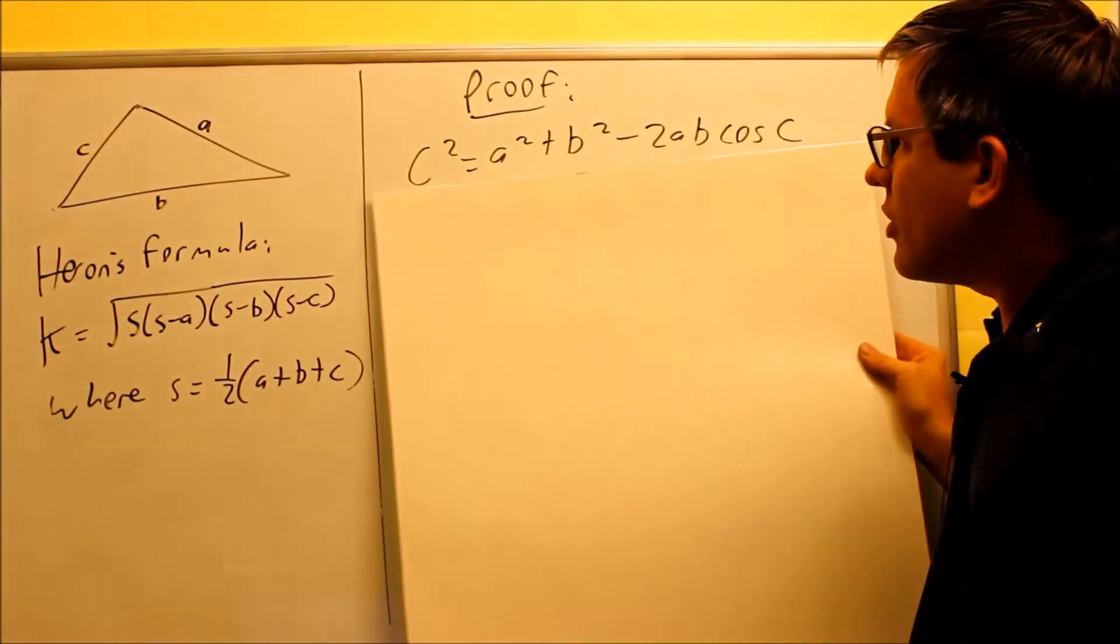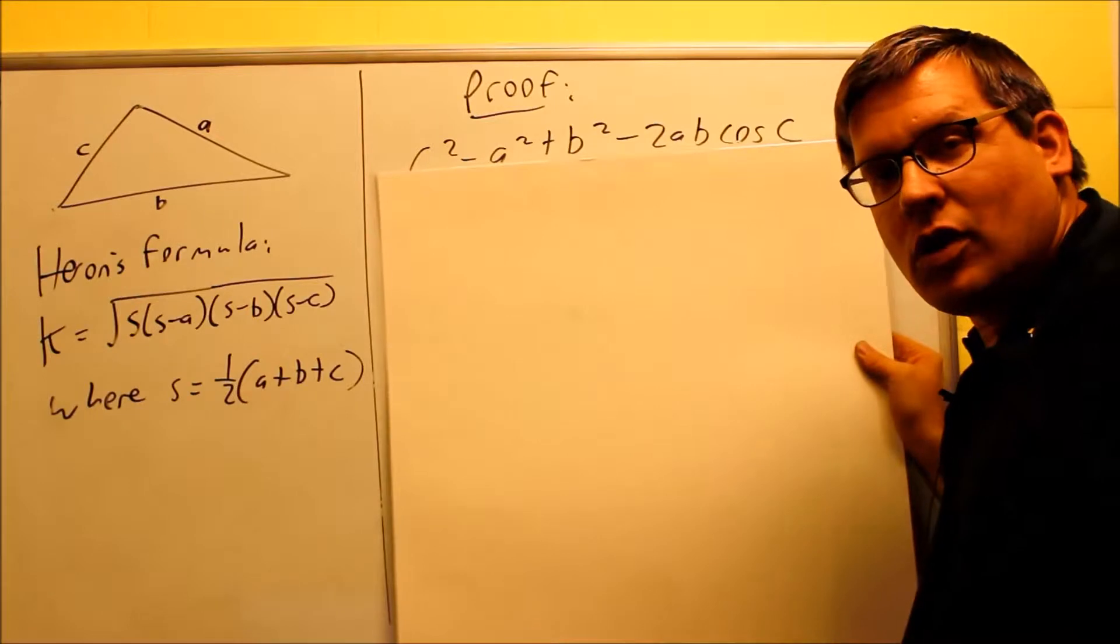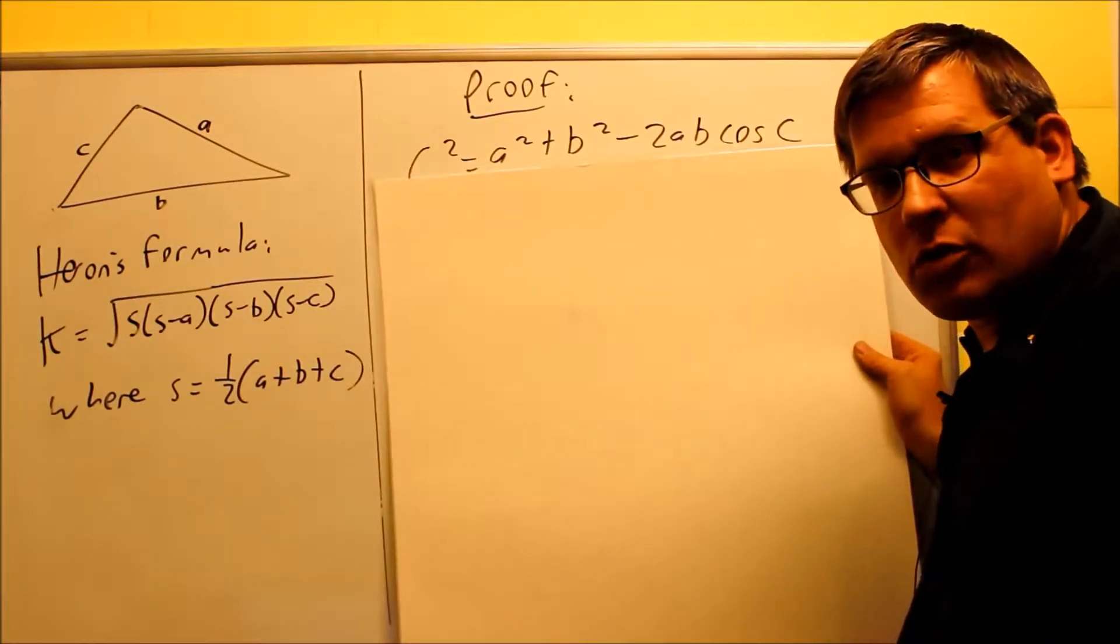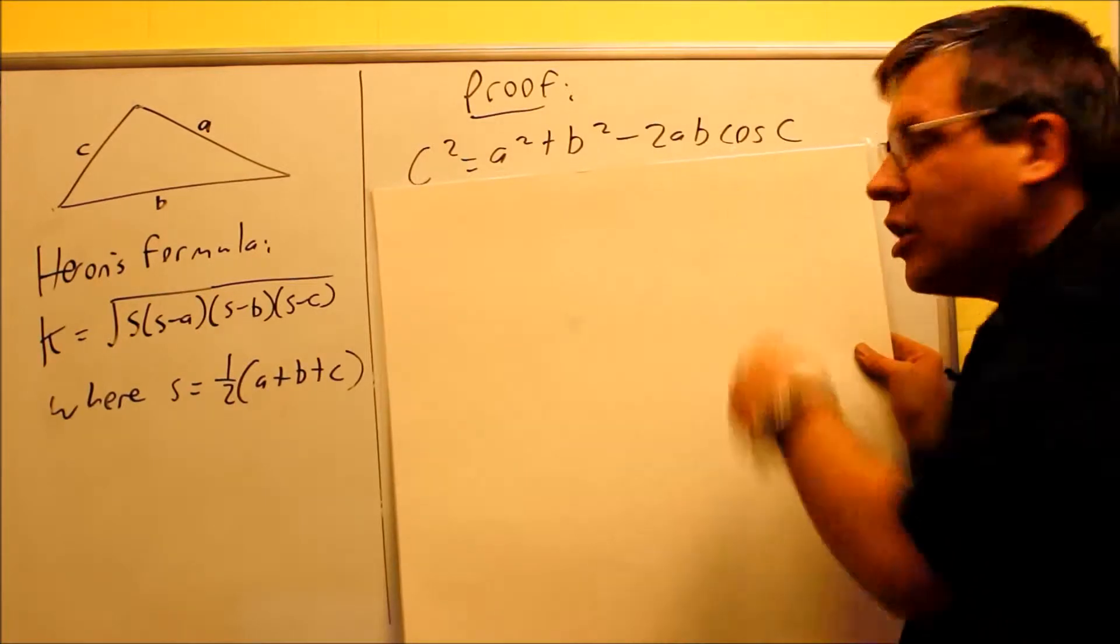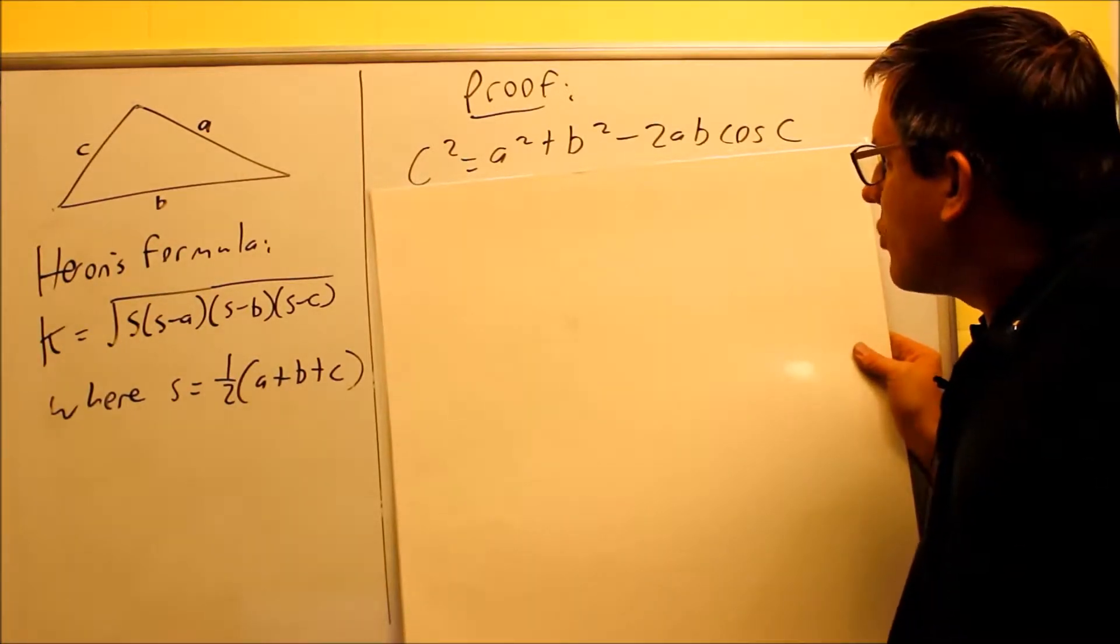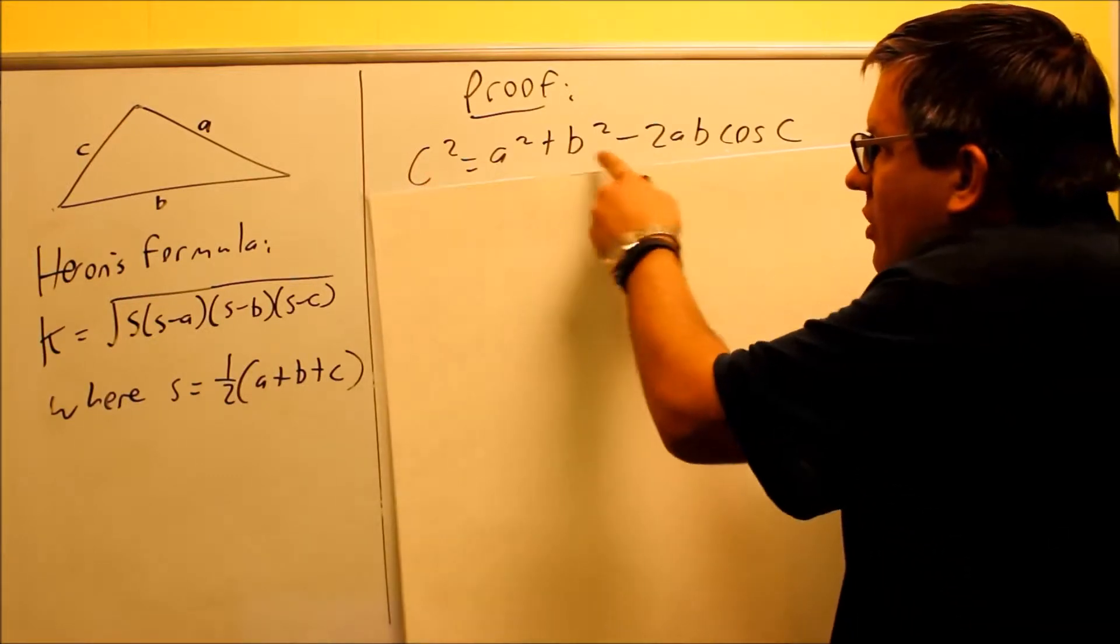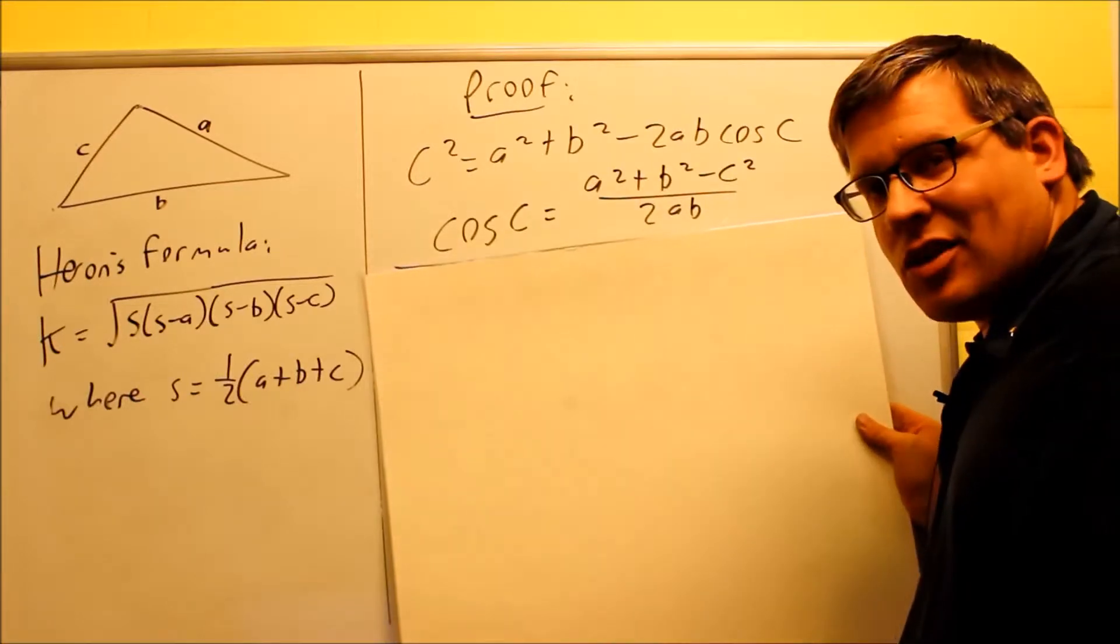What we're going to start with is something we've already seen before. This is going to be the law of cosines, one of the versions of the law of cosines. That's what we're going to begin with here. So next, what we have to do is we're going to isolate, we're going to solve for cosine c. And to do so, we're going to subtract the c squared, move this term over, divide by 2ab, and we do all that and we get this.